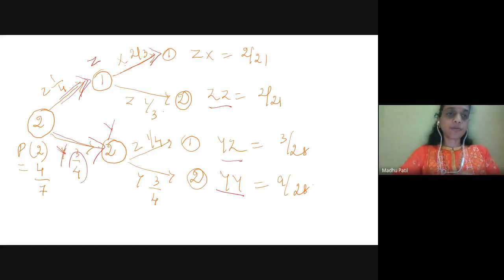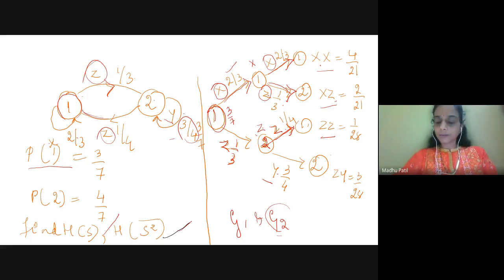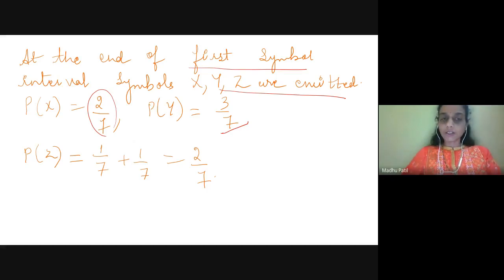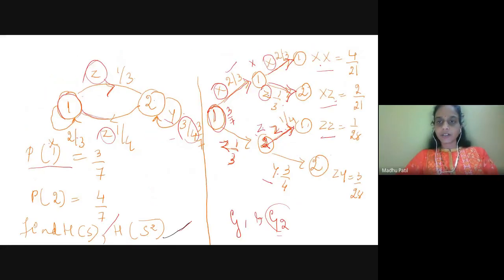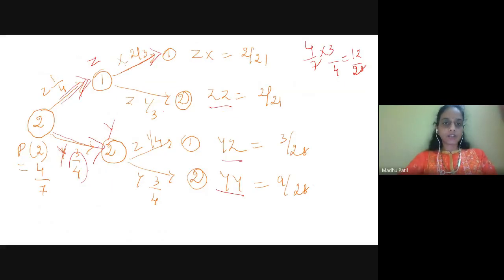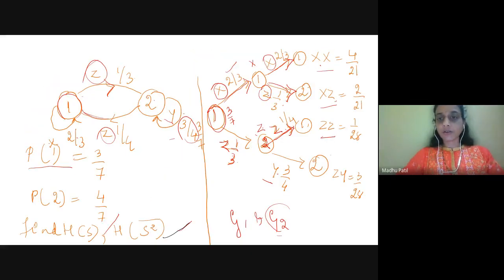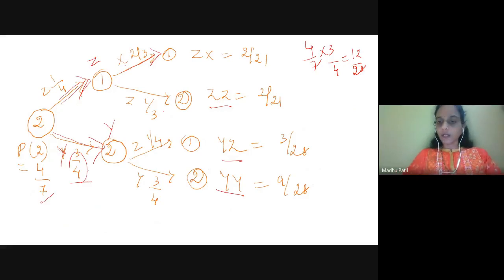For p(y): y is emitted from state 2, so it is 4/7 into 3/4, giving 12/28, which is 3/7. For p(z): z is emitted in the first symbol interval from state 1 as 3/7 into 1/3 = 1/7, and from state 2 as 4/7 into 1/4 = 1/7. Adding both, p(z) = 2/7.